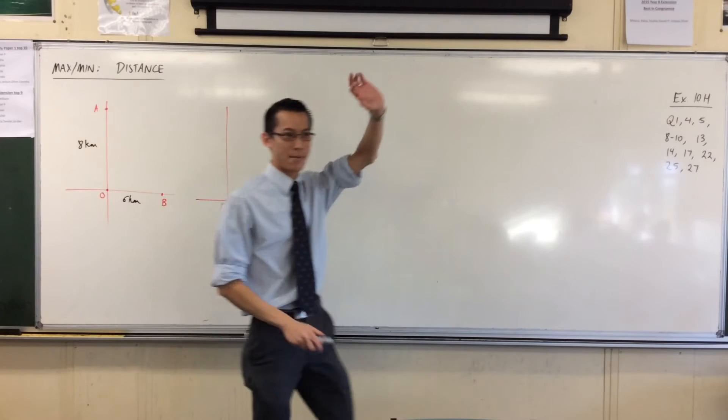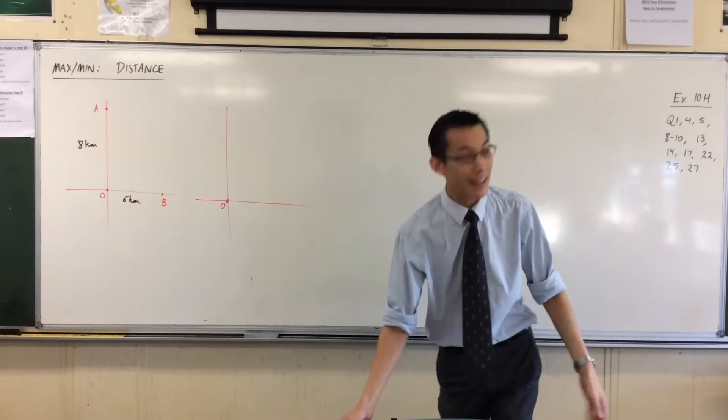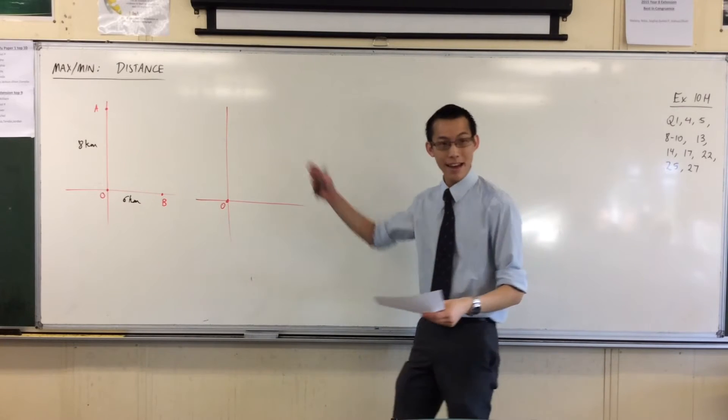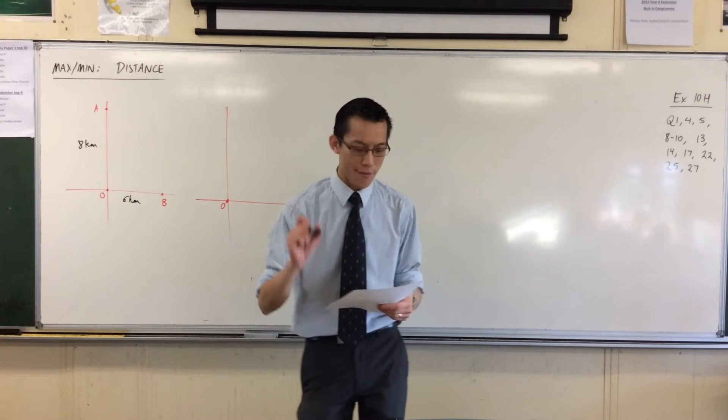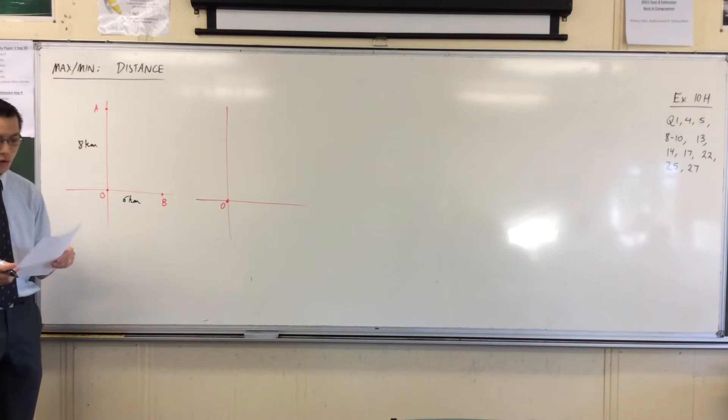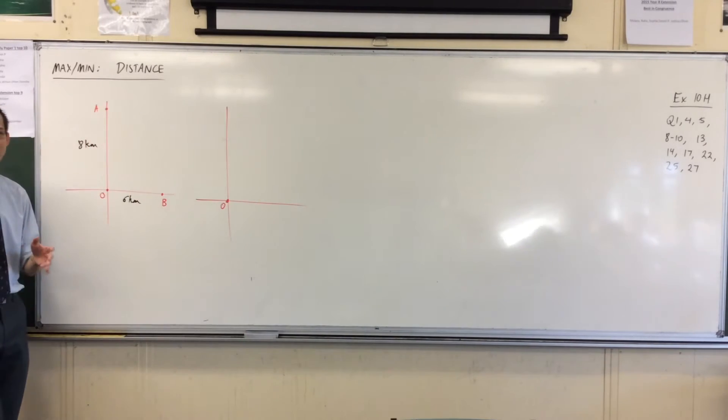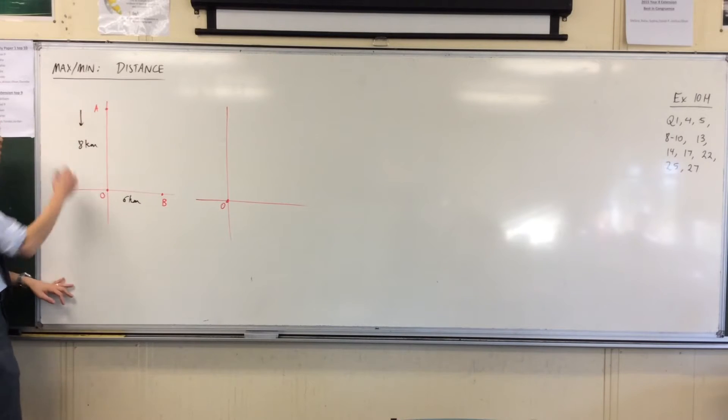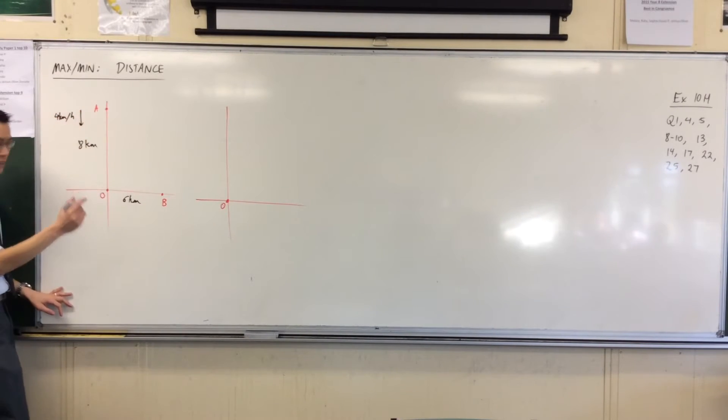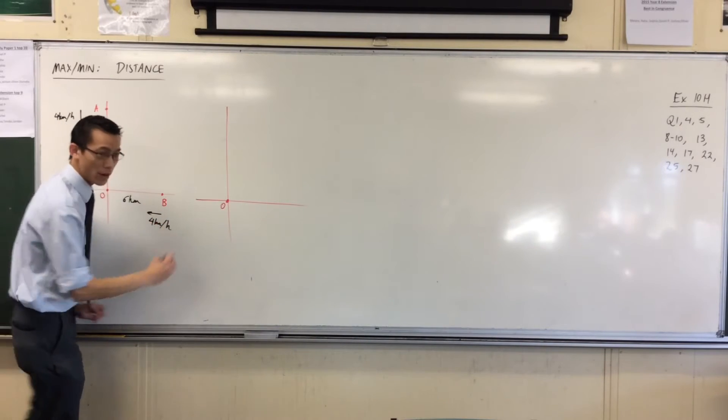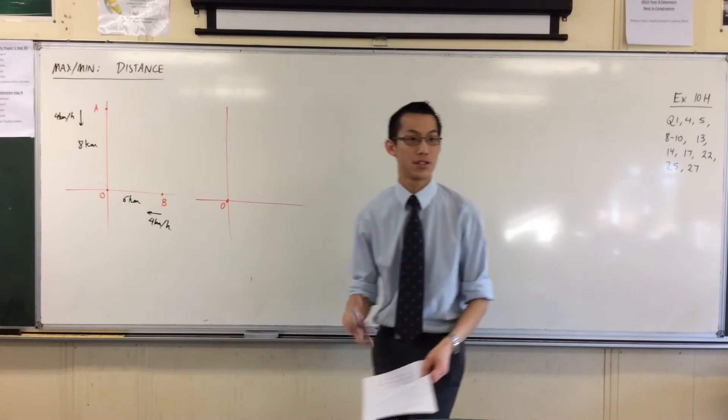So we've got 8 kilometers here and 6 kilometers here. Raise your hand if your diagram looks exactly like mine so far. This is the way I generally approach something—I'm reading and writing. Two men start walking at the same time from A and B respectively toward O at 4 kilometers per hour each. At this point, here's the next piece of information I put on. This guy is walking this way and this guy is walking that way, and they both have a speed. So this guy's going that way at 4 kilometers per hour and this guy is also going this way at 4 kilometers per hour.